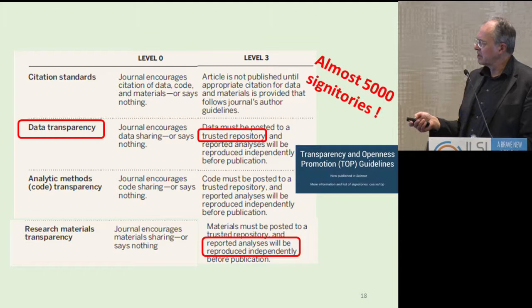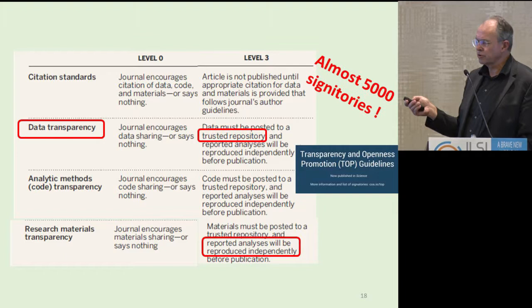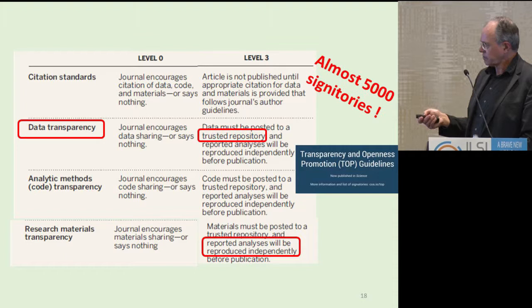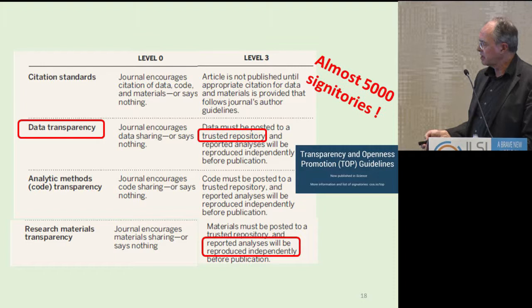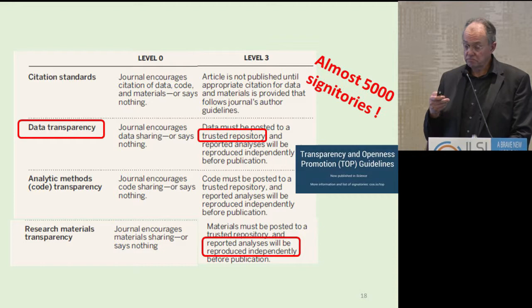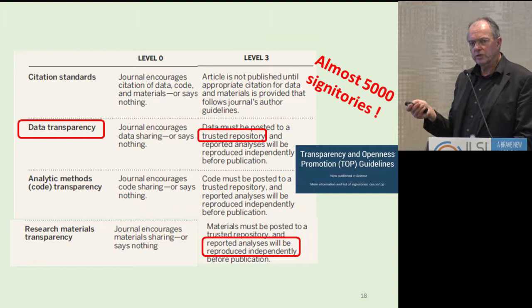These are the TOP — Transparency and Openness Promotion — guidelines. There are four levels; I've left two out here. You can be a signatory — and 5,000 journals are signatories so far. At level one you can say 'we encourage data sharing.' At level three you make it mandatory to put everything in a trusted repository and reproduce all analyses. You can make your choice as a journal where you want to be in this continuum, and there's always a challenge of whether you want to move one level up.